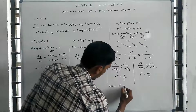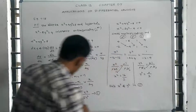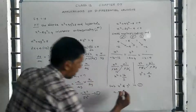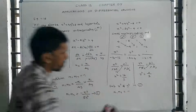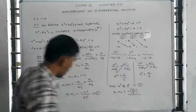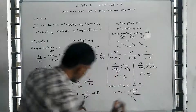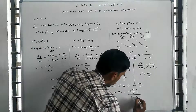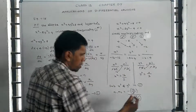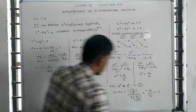Substituting x squared equal to 16 divided by 3 and y squared equal to 2 divided by 3 into m1 into m2: m1 into m2 equals minus x squared divided by 8y squared, equals minus 16 divided by 3, whole thing divided by 8 into 2 divided by 3. The 3 and 3 cancel, giving minus 16 divided by 16, which equals minus 1.